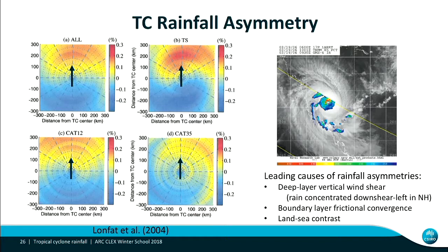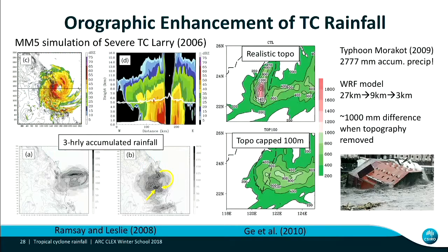Rainfall asymmetries are also important — rainfall is generally highly asymmetrical in tropical cyclones, particularly in weaker storms. For weaker tropical storms, most of the rainfall occurs in the forward quadrants of the storm. As you go to very strong storms, the asymmetry tends to weaken, producing a slightly more symmetric rainfall pattern. The leading causes include deep-layer vertical wind shear, boundary layer frictional convergence, and land-sea contrast. An example from Tropical Cyclone Larry shows rainfall offset to the right of the storm track.